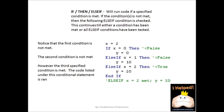Here we have the if-then-else-if. We go down a checklist starting at x equals 2. Is it equal to 0? No. So we go to the next condition. Is it equal to 1? No. So we go to the next condition. Is it equal to 2? Yes — that statement is true. So we end up with y assigned a value of 20.